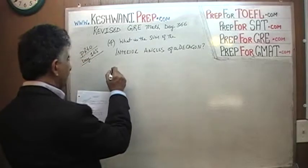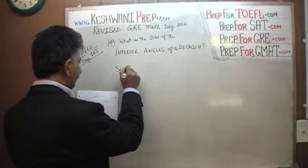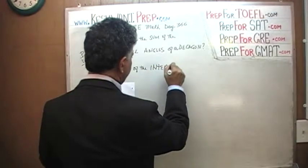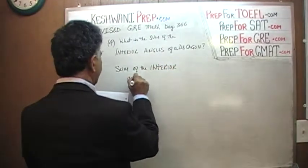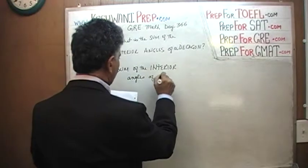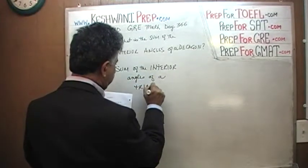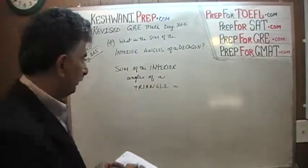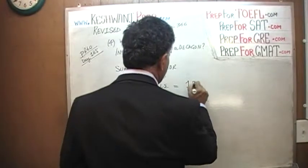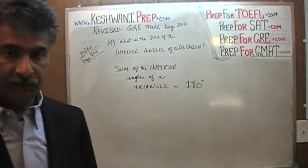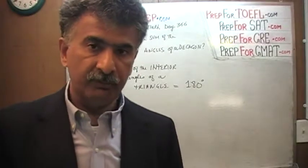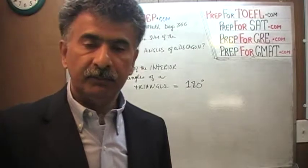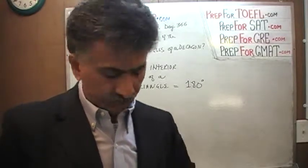Let's start with something simple. The sum of the interior angles of a triangle — we already know the sum of the interior angles of a triangle is 180. Everybody knows that. The sum of the angles in any triangle, it doesn't matter what particular type of triangle it is — whether it is isosceles, obtuse, or acute — the sum of the interior angles of a triangle is 180.